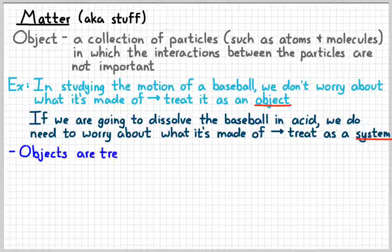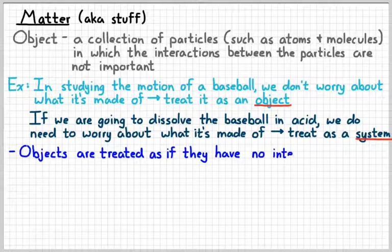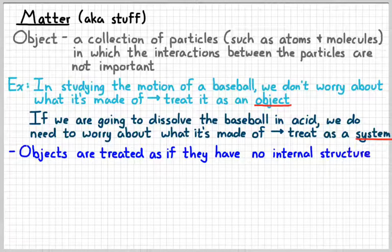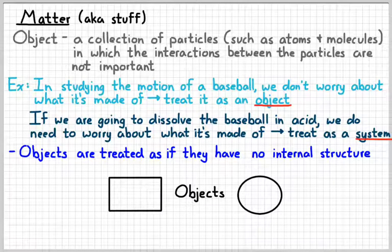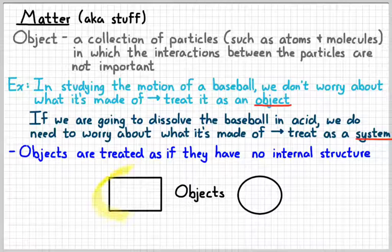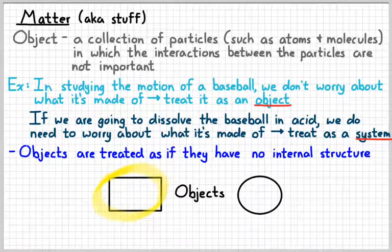When we think of things as being objects, basically we're acting as if they don't have any internal structure, like it's just one solid point in space. So a key thing to remember, objects don't have any internal structure.